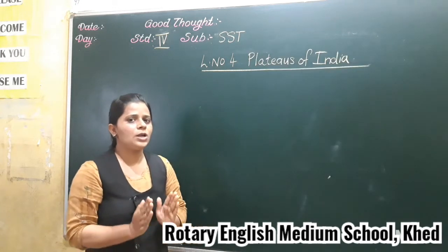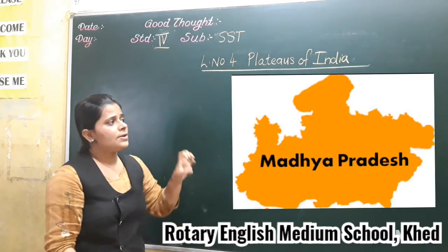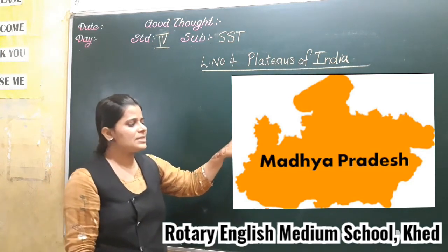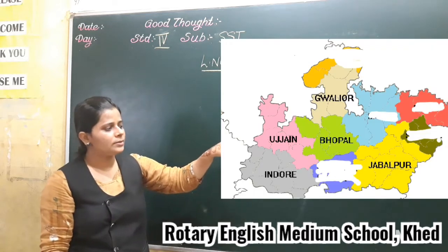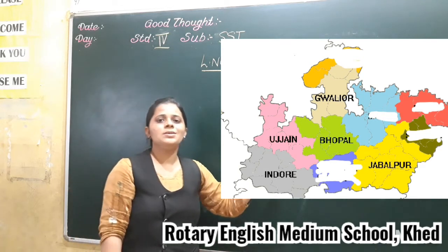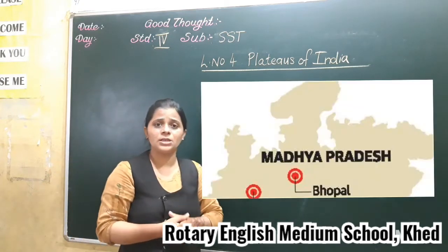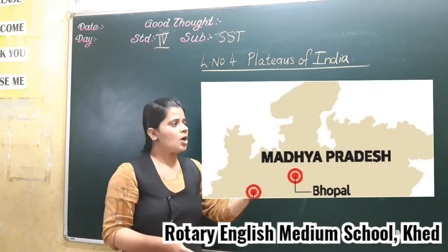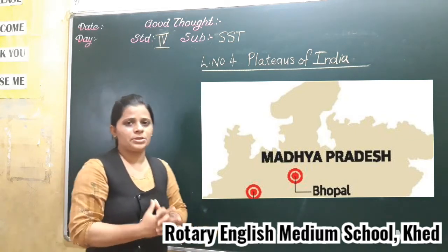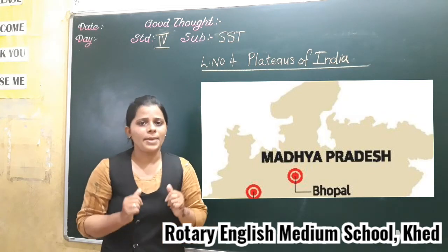Hope till here you have understood about the central part of India. Now we will see which cities come in Madhya Pradesh. The cities are Gwalior, Bhopal, Indore and Jabalpur. These cities are included in Madhya Pradesh. And do you know which is the capital city of Madhya Pradesh? That is Bhopal. Bhopal is the capital city of Madhya Pradesh.